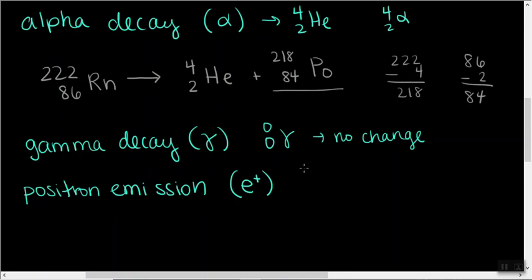So as you would imagine, this is going to have a positive 1 atomic number. And it's abbreviated E plus. So in an example, maybe we'd have 18,9, fluorine undergoing positron emission. So we know one of the products is 0, positive 1. So pause the video, and you can determine the second product here.